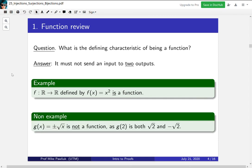Whereas a non-example is the function g(x) = ±√x. It's not a function because g(2) is both √2 and -√2. So one value 2 is getting sent to two different values. That's what it means to not be a function.